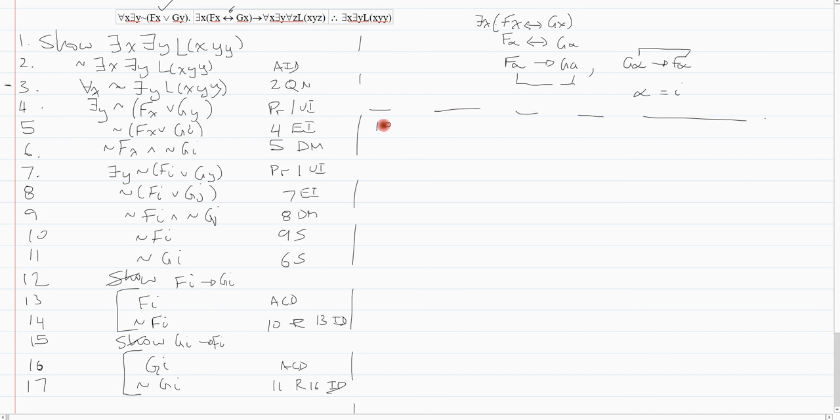Okay. So on line 18 now, I can go backwards and I'm going to build the biconditional. And I get FI biconditional GI. And then that is line 12 and 15, conditional to biconditional. And then I will existentially generalize that to get FX biconditional GX. And that is line 18 EG. Now the point of all this was now I can modus ponens and I now have for all X, there exists a Y, for all Z, L, X, Y, Z. And that's line 19, premise 2, modus ponens.